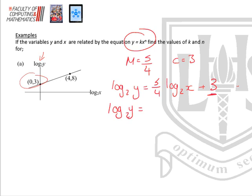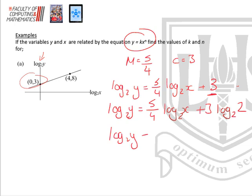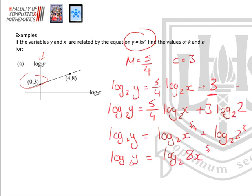So log y to the base 2 equals 5 quarters log x to the base 2 plus 3 log. The log I need to introduce — I know the base needs to match — so it's log of 2 to the base 2. Powers can fly up to give log to the base 2 of x to the power 5 over 4, plus log of 2 cubed to the base 2. Adding two logs means we multiply: 2 cubed is 8, so it's log to the base 2 of 8x to the power 5 over 4. Cancel the single log on each side, giving y equals 8x to the power 5 over 4.